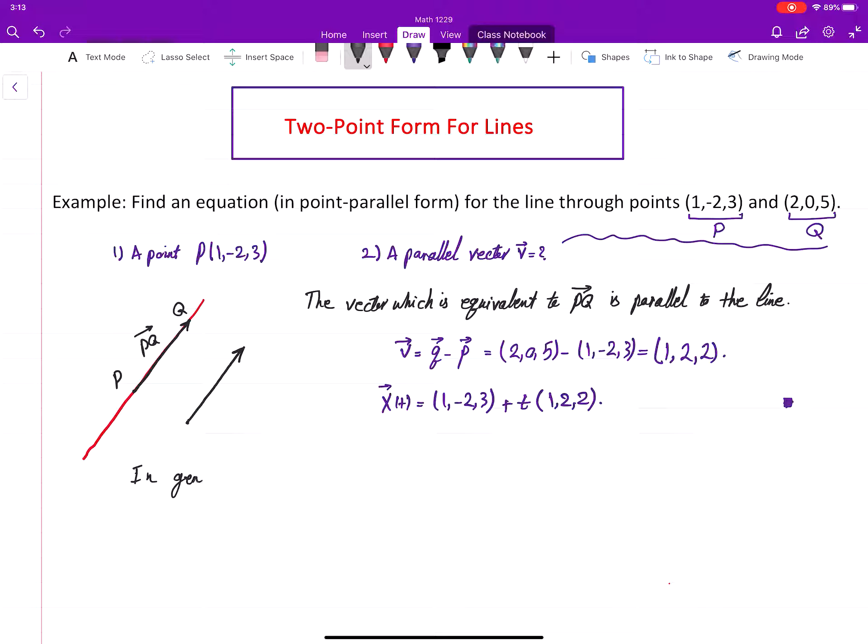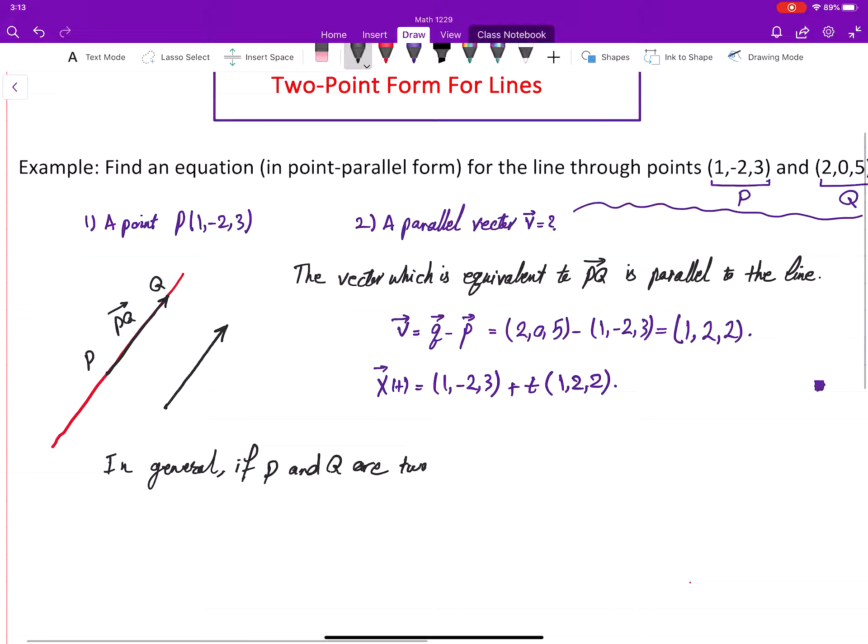Well, this work can be done in a very general setting. In general, if P and Q are two distinct points on a line, then we can always set V, the parallel vector, to be Q minus P. And then use that to write point-parallel form: P plus t times (Q minus P). This t can be multiplied inside, distributed over the vector.